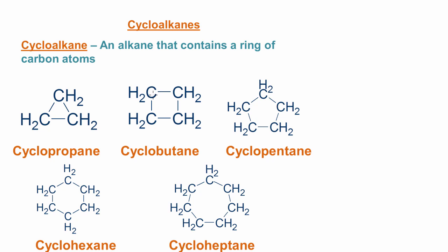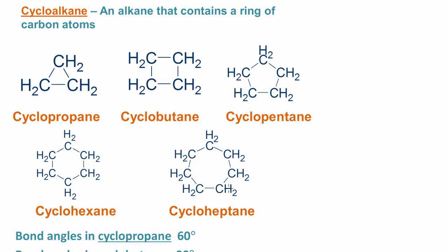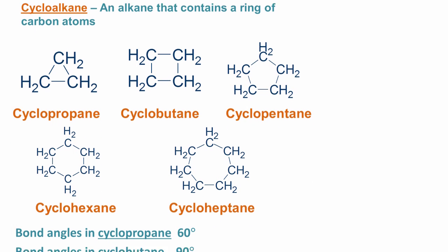Cyclobutane has four carbon atoms, cyclopentane has five carbon atoms, cyclohexane has six carbon atoms, and cycloheptane has seven carbon atoms. We're not going to go any further than that.